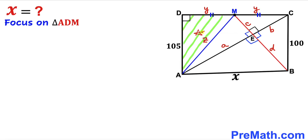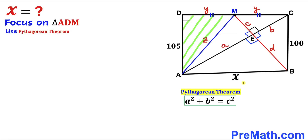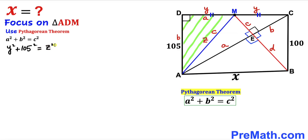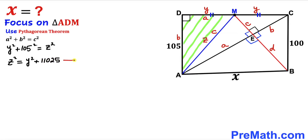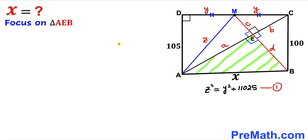Focusing on right triangle ADM, we apply the Pythagorean theorem: A² + B² = C². Here, the legs are Y and 105, and the hypotenuse is Z. So we get Y² + 105² = Z², which gives us Z² = Y² + 11,025. We call this equation number one.